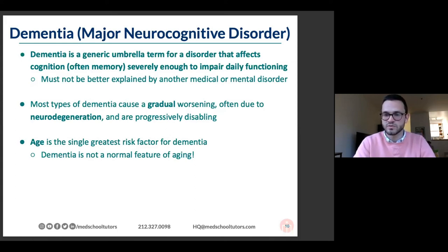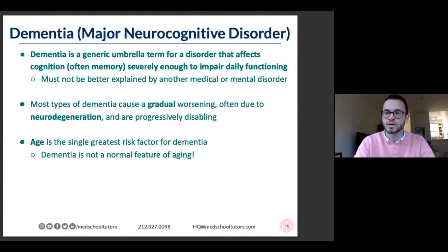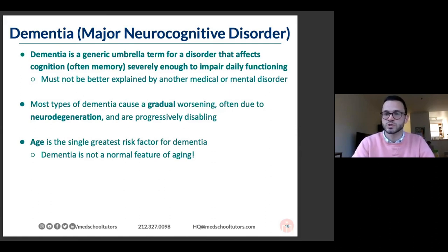A question from the chat: is this different from delirium tremens? Yes — delirium tremens is the term used for the later period of alcohol withdrawal, around 48 hours, characterized by hallucinations and increased risk for seizures. It's a different type of delirium.